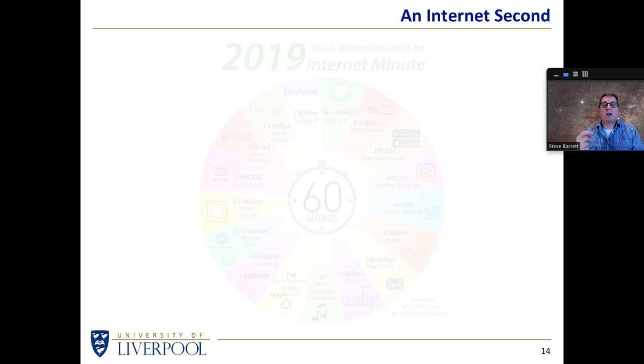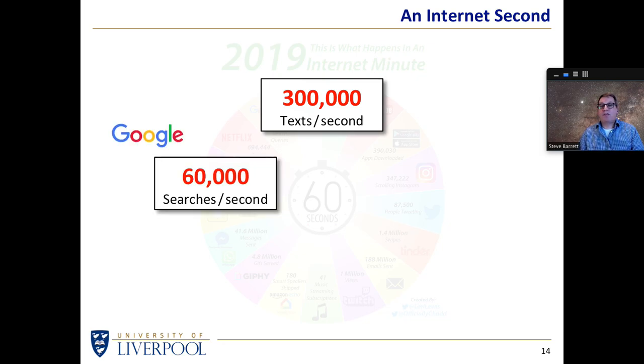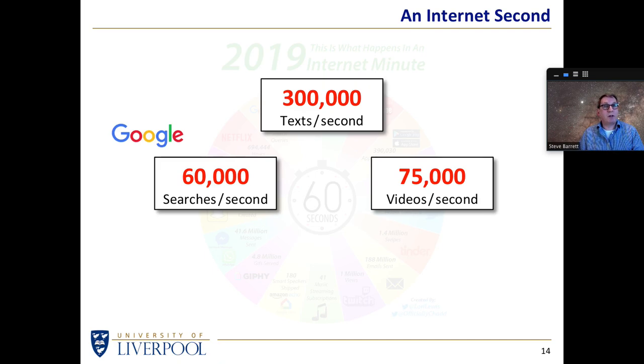If we take a typical second out of 2019, we found that 300,000 text messages were sent every second, 60,000 searches were carried out by Google, and 75,000 videos were streamed each and every second. I believe that of those 75,000 videos, most of them probably contained a cat or a kitten.